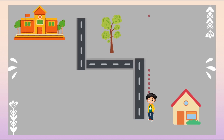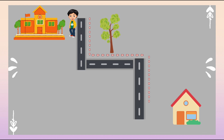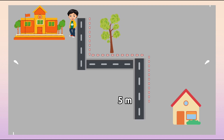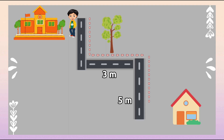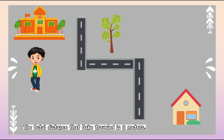Take a look at this sample. Hi, I'm Jake going to school. I walk five meters to the north, three meters to the west, and another three meters to the north. So what is the total distance I traveled going to school? To find this, we just need to simply add the distances: five meters north, three meters west, and three meters north. The total distance that Jake traveled is 11 meters.